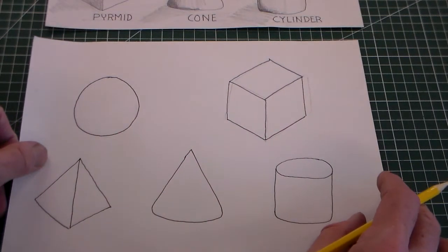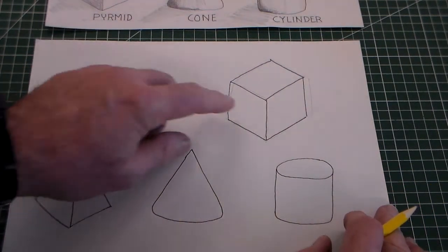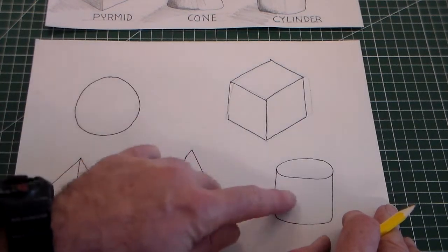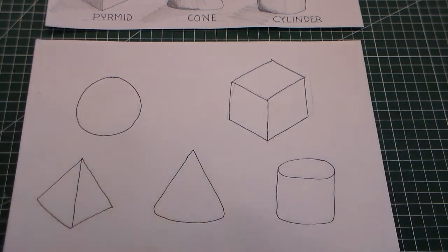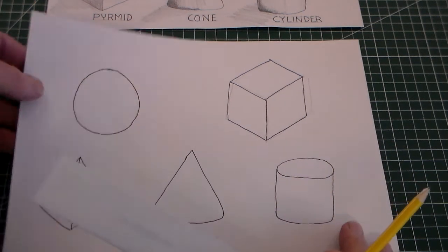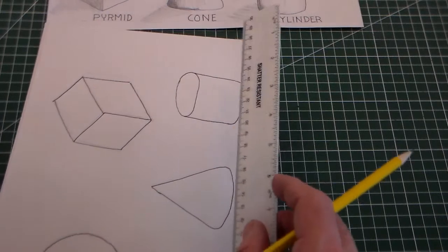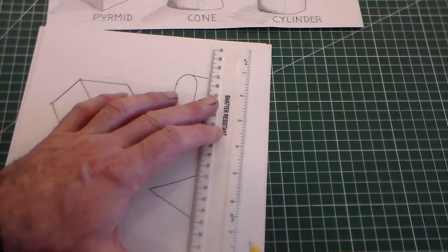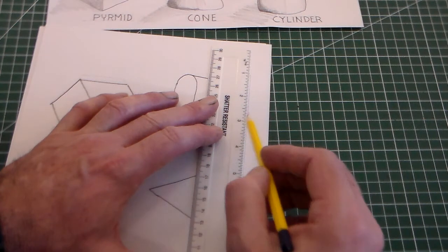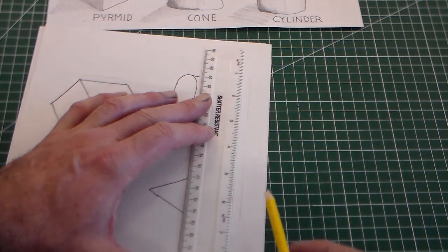So we can see here that we have our five shapes. We have our sphere, our cube, cylinder, cone and pyramid. Now what we're going to do is we're going to label those. All the time it is important to keep our pencil sharp. As soon as the pencil gets less sharp we'll find that we start having thicker lines and we're having to press harder and then we're not getting the construction lines, the lighter lines that we need.